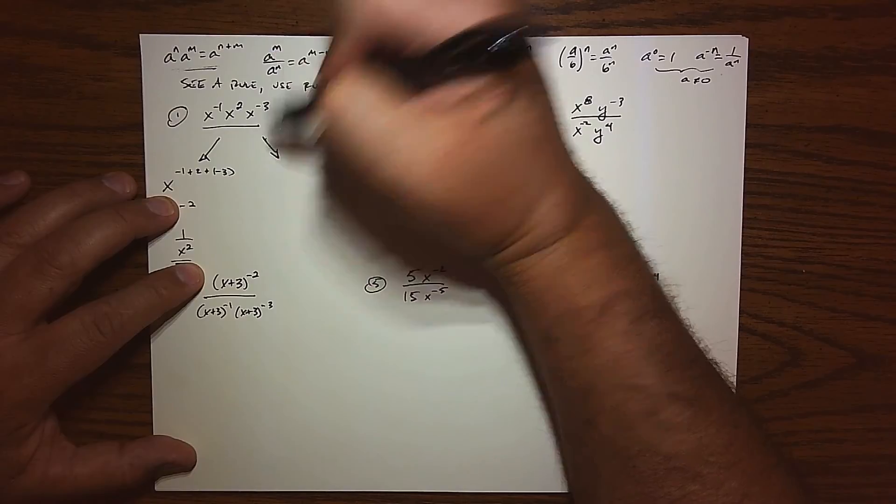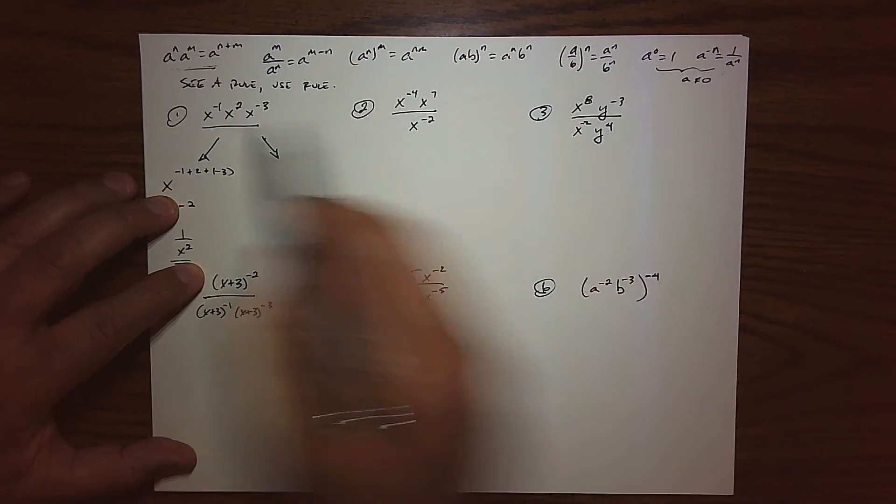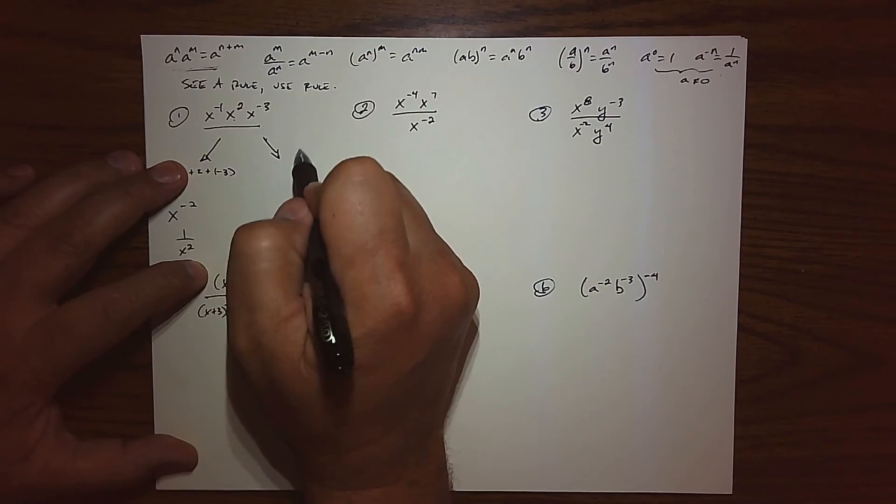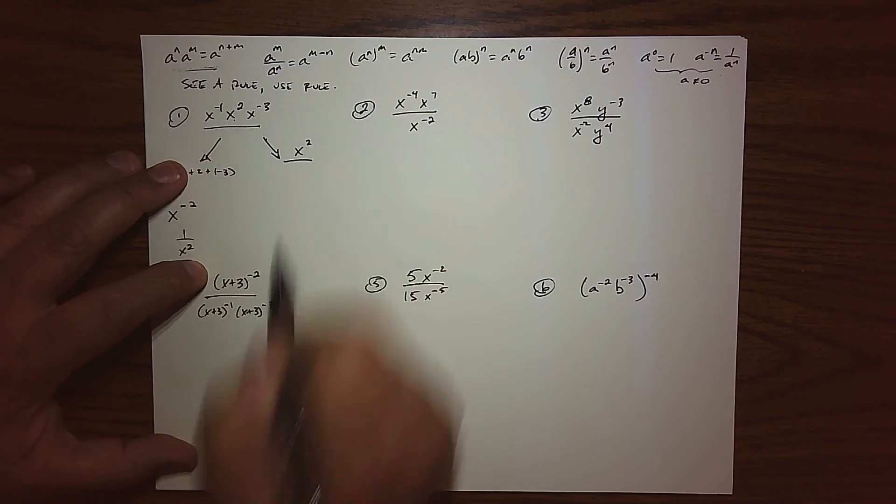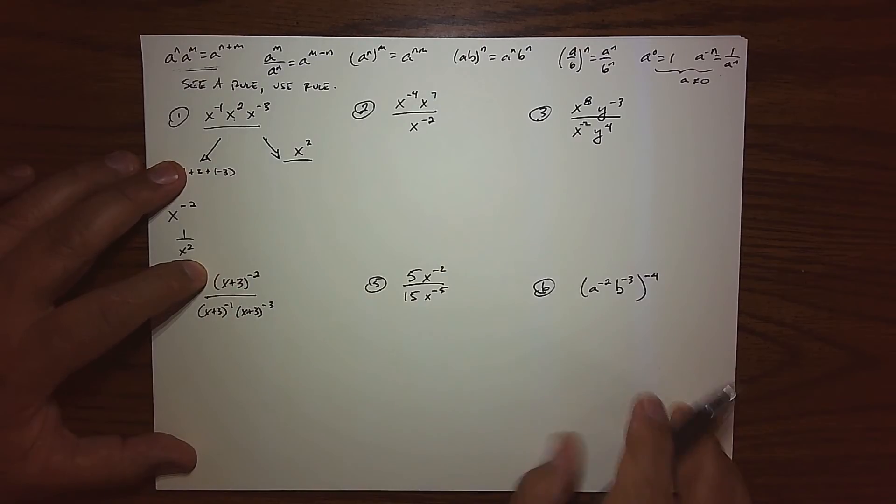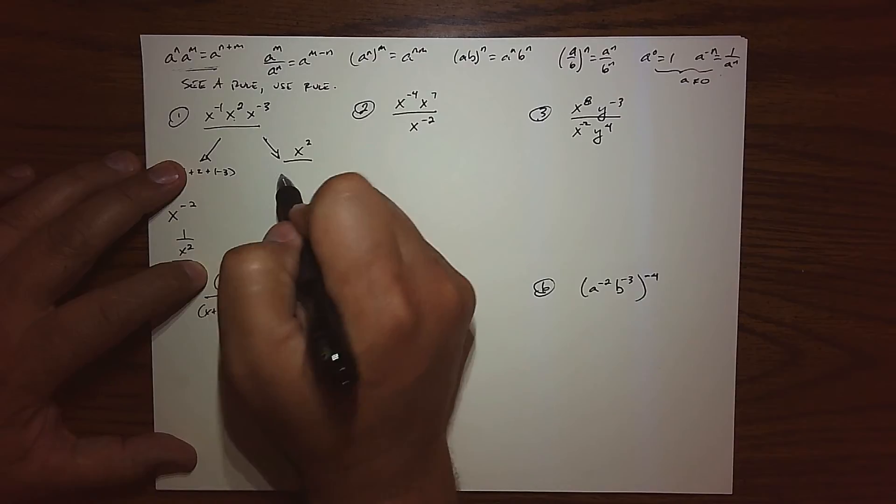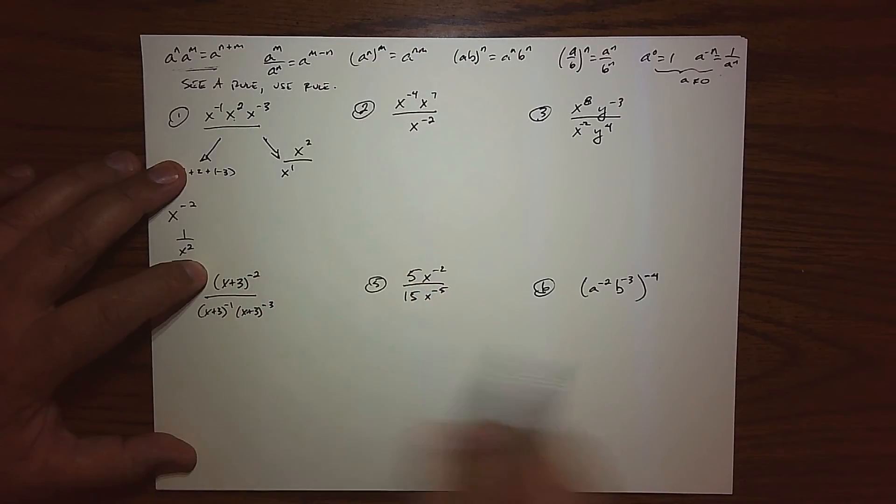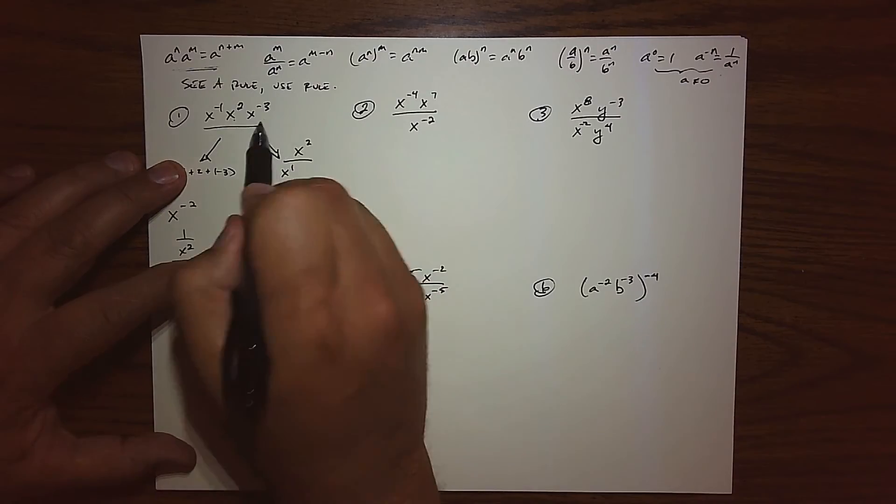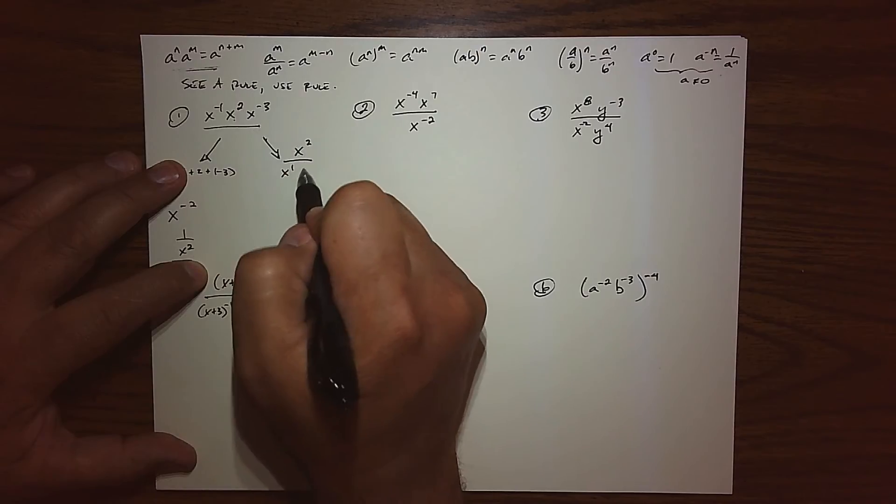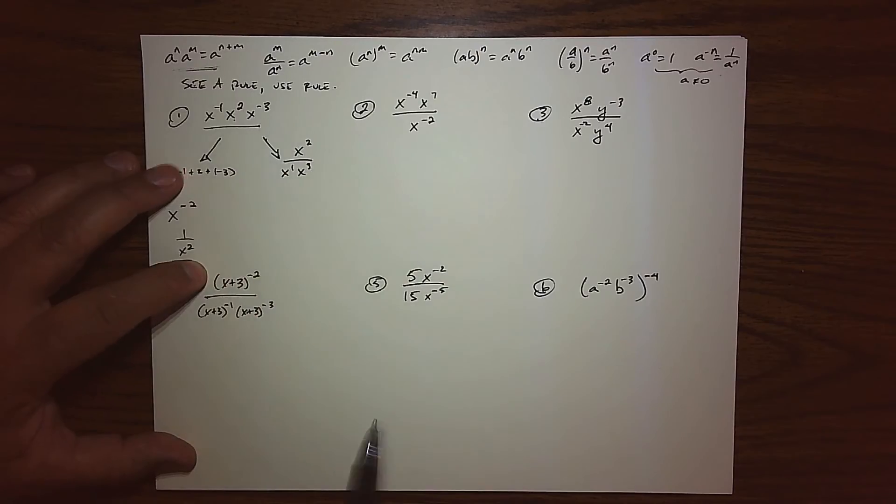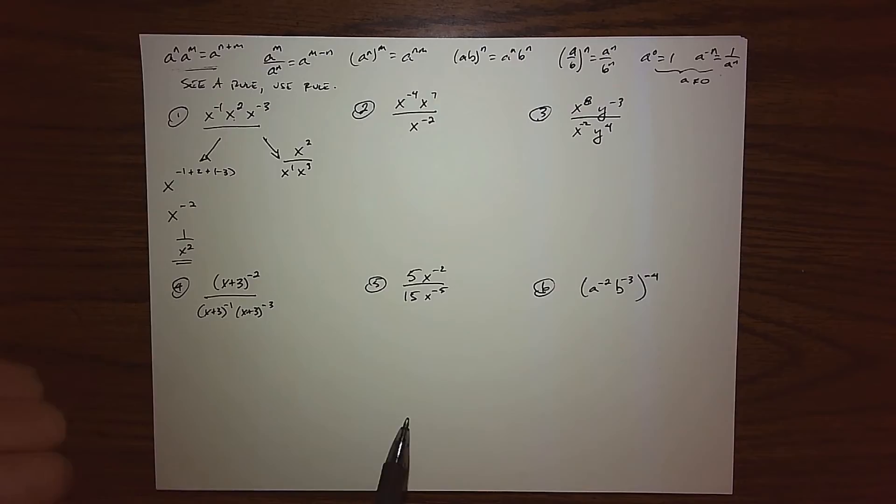However, some people like to use this rule right off the bat. So this x squared is a positive exponent, so it stays up in the numerator. And then this is a negative exponent, so it's going to flip down to the denominator. And then x to the negative 3 is a negative exponent, so it'll flip down to the denominator. So some students might actually want to use their negative exponential rule first.